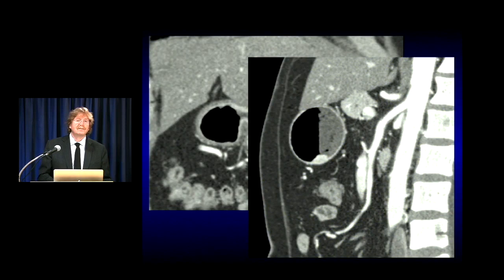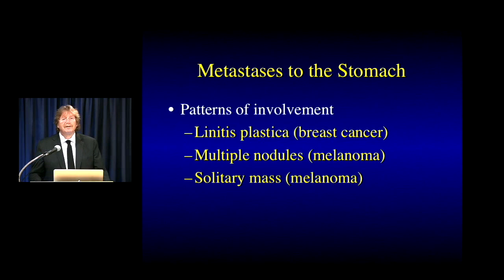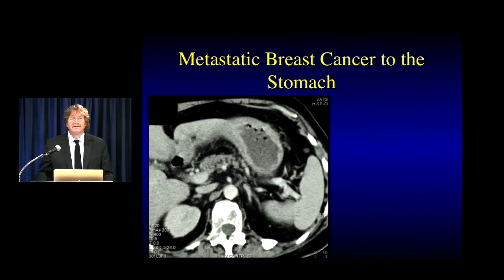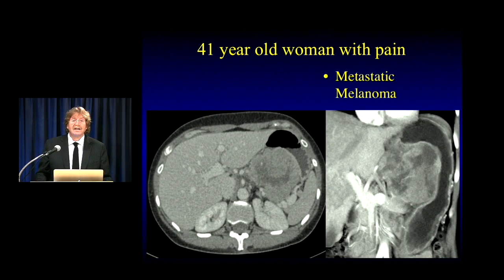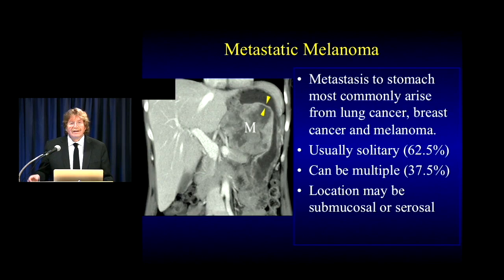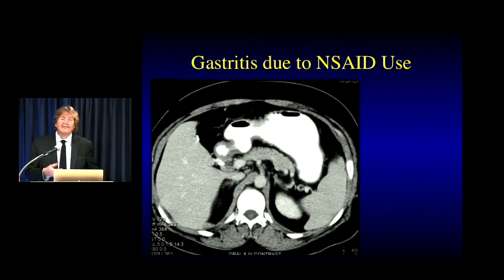Metastatic patterns to the stomach include linitis plastica from breast cancer — which looks identical to primary gastric linitis plastica — nodules like melanoma, and even a solitary mass. One patient with diffuse gastric infiltration looked like primary adenocarcinoma, but had known breast cancer — biopsy confirmed metastatic breast cancer. Another patient had a large exophytic mass I called a GIST tumor, but biopsy revealed metastatic melanoma. Metastases to the stomach most commonly arise from lung cancer, breast cancer, and melanoma. With melanoma, it can be multiple but is usually solitary, usually submucosal or serosal.